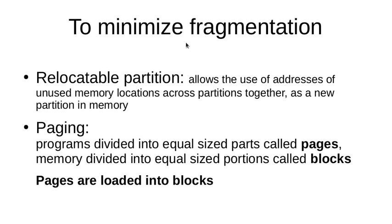Relocatable partition allows the use of unused address spaces across partitions, grouping them together as a new partition. If there are several partitions with unused memory locations, those address spaces can be combined and used together as a single new partition. The other solution, which we are already familiar with, is paging. In paging, programs are divided into equal-size parts called pages, and the memory is divided into equal-size portions called blocks. During execution, the pages are loaded into the blocks.